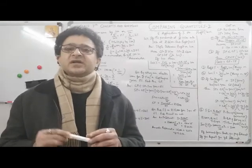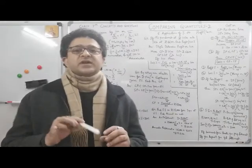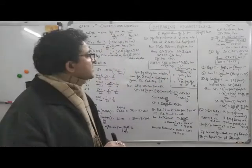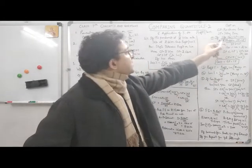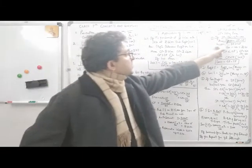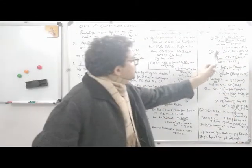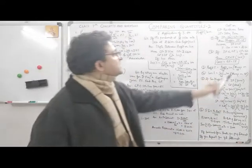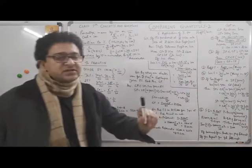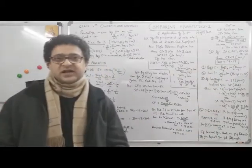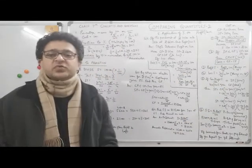Let's take an example. If selling price is 120 and cost price is 100, profit = SP − CP = 120 − 100 = 20. So when SP is greater than CP, there is a profit. But if SP is 100 and CP is 120, then SP is less than CP — that means a loss. You are selling at a lower price than you bought. So you have a $20 loss. The key point: whenever SP is greater than CP, it is profit; when SP is less than CP, it is loss.